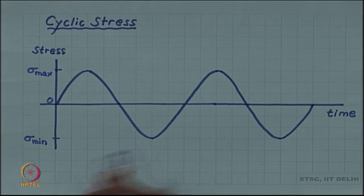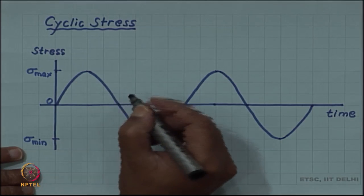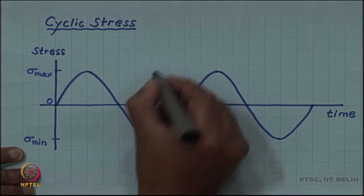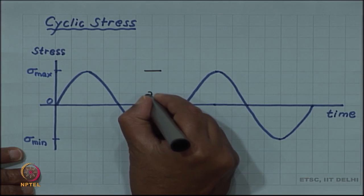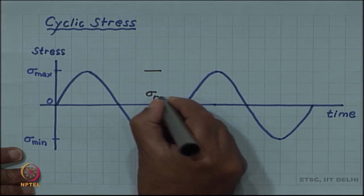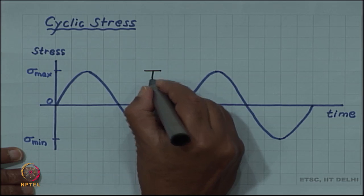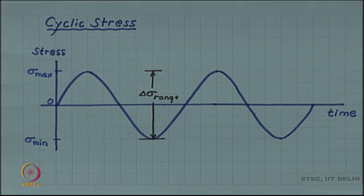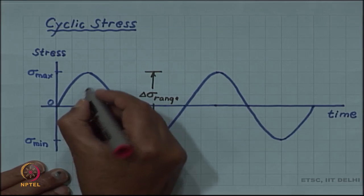Then we can define several parameters like the maximum and minimum stress. The difference between the maximum and minimum stress, this total stress value, is called the range. Then the value from the mid of the range to the maximum value is called the amplitude.